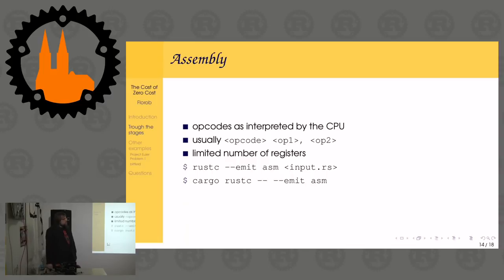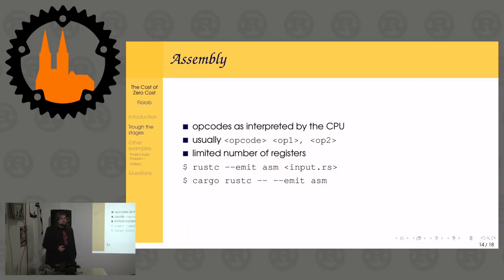The way to output assembly is very much the same as LLVM IR - you just write `--emit=asm` instead of `--emit=llvm-ir`. In theory you can do that for various CPUs and dialects by applying cross-compilation options to rustc.